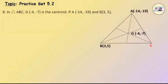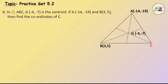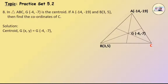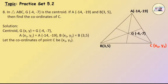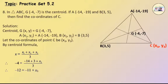Q8: In triangle ABC, G(-4, -7) is the centroid. If A is (-14, -19) and B is (3, 5), then find the coordinates of C. Let A(x1, y1) = (-14, -19), B(x2, y2) = (3, 5), and let the coordinates of point C be (x3, y3). By the centroid formula, x = (x1 + x2 + x3)/3. Therefore, -4 = (-14 + 3 + x3)/3. Therefore, -12 = -11 + x3. Therefore, x3 = -12 + 11 = -1.